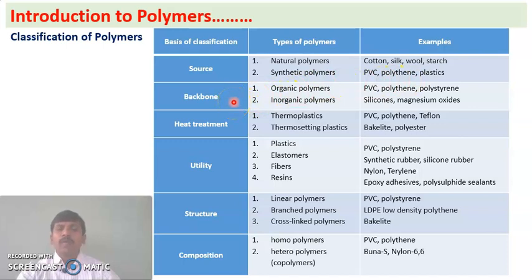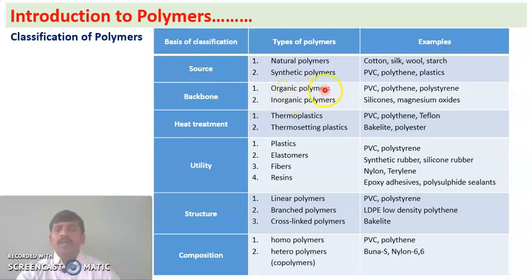The next classification is based on the backbone of a polymer. Based on backbone, polymers are classified into two types: organic polymers and inorganic polymers. In organic polymers, the backbone is totally made up of carbon.